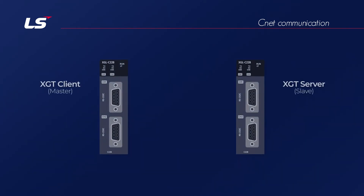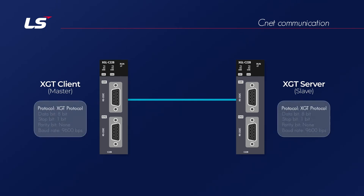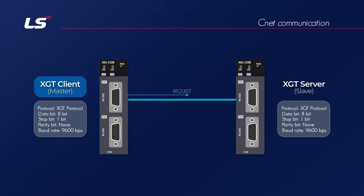LS-CNET communication transmits one-bit data at a set speed through a single signal line. It uses an asynchronous communication method that does not transmit synchronous clock signals at the same time. So the data bit, stop bit, parity bit, and communication speed settings between communication devices must be the same. The master and slave must be set separately between devices for CNET communication — the master requests data and the slave responds.